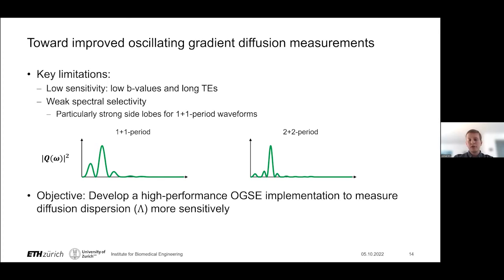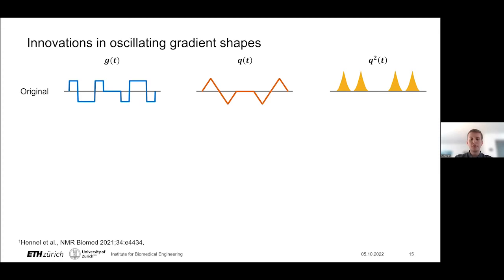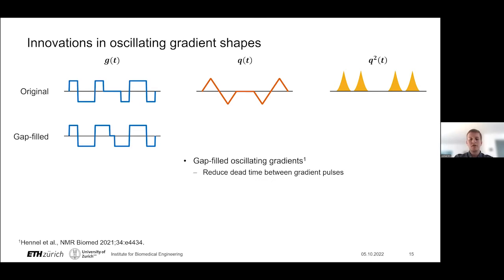In light of these limitations, we had the objective of developing a high-performance OGSE implementation for measuring diffusion dispersion with better sensitivity. The first thing we worked on was developing oscillating gradient shapes. I show here an original 1+1 period oscillating gradient waveform along with q(t) and q². Our modification is rather simple: we try to fill the gap between the oscillating gradient pulses. Typically it equals half a period; we've shortened it to the shortest time possible to fit in the 180-degree RF pulse, thereby eliminating some dead time.